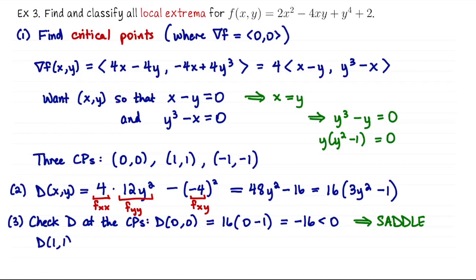Next, we'll do D of (1,1). That's going to be 16 times 3 minus 1, which is 32. You don't have to actually compute the number 32. If you can look at that and say, you know what, that's going to be 16 times 2 is positive, right? What we really care about here is the sign. If that determinant quantity is positive, then we also need to know how f_xx behaves at the point. For this particular function, our second derivative of f with respect to x is actually constant 4, which is also positive. Both positive tells us local min.